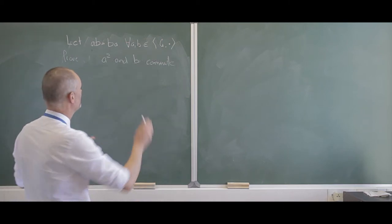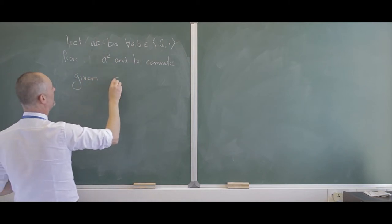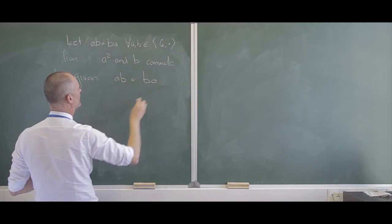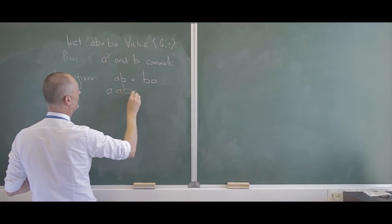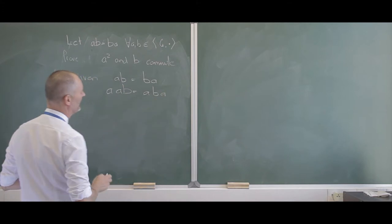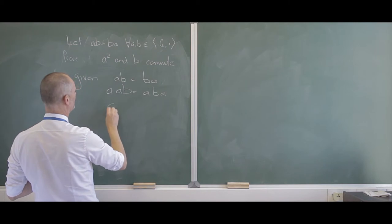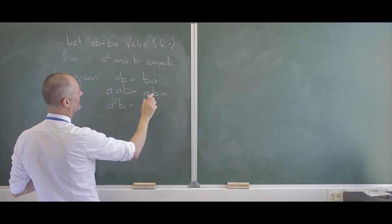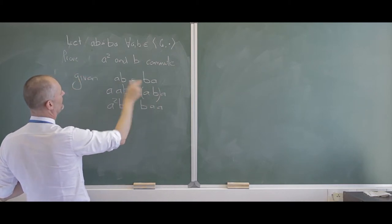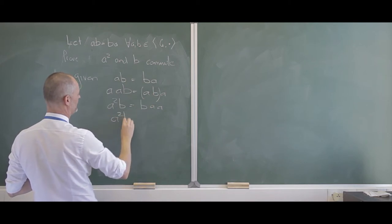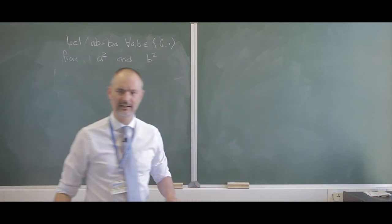Still with this special group, let's show that A squared and B commute. Given AB equals BA, I can put A in the front: ABAB equals ABBA. We know AB equals BA, so I can say A squared B equals B times A times A by associativity. So A squared B equals B·A squared, and they commute as well.